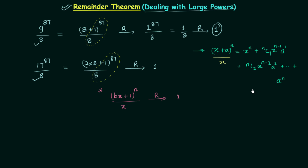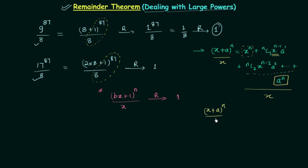Now I will divide (x + a)^n by x, so the right-hand side is also divided by x. The first term x^n divided by x gives remainder 0, because x is a factor. Similarly, x^(n−1) divided by x also gives remainder 0, and all terms give remainder 0 except the last term a^n. So the final remainder depends only on the last term: the remainder of (x + a)^n divided by x equals the remainder of a^n divided by x.